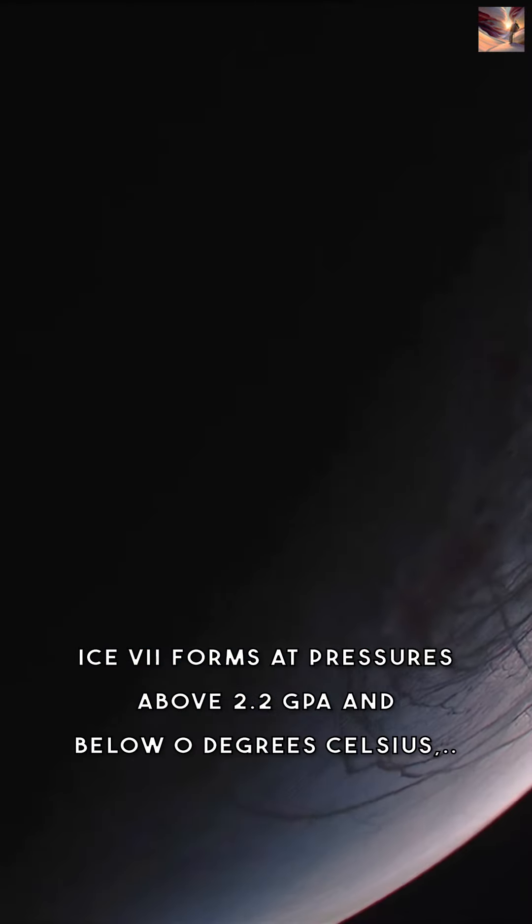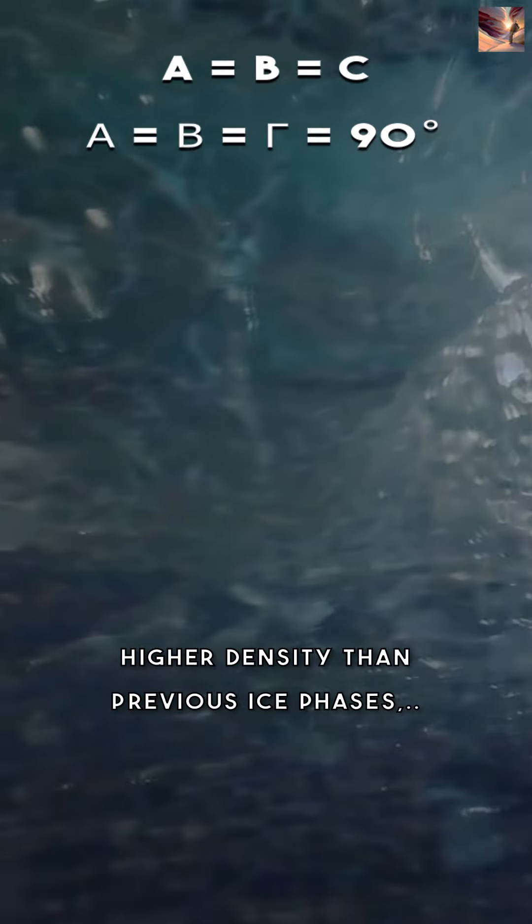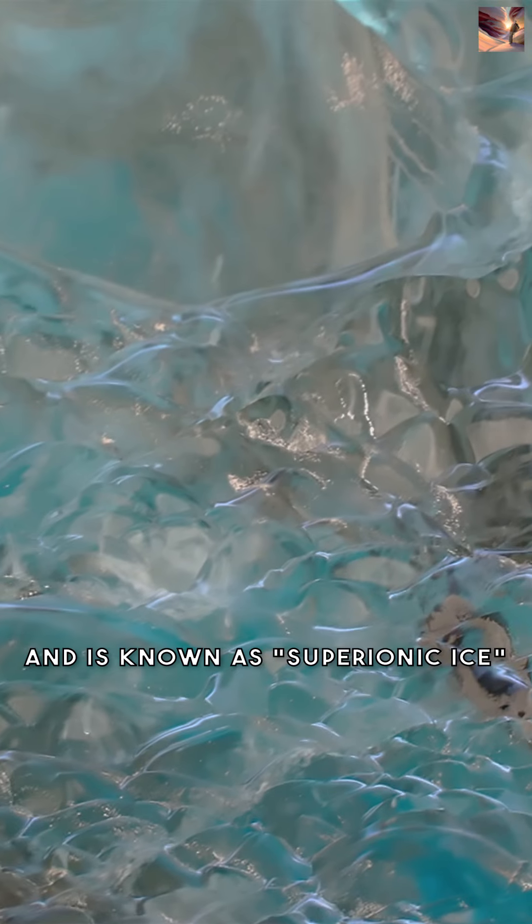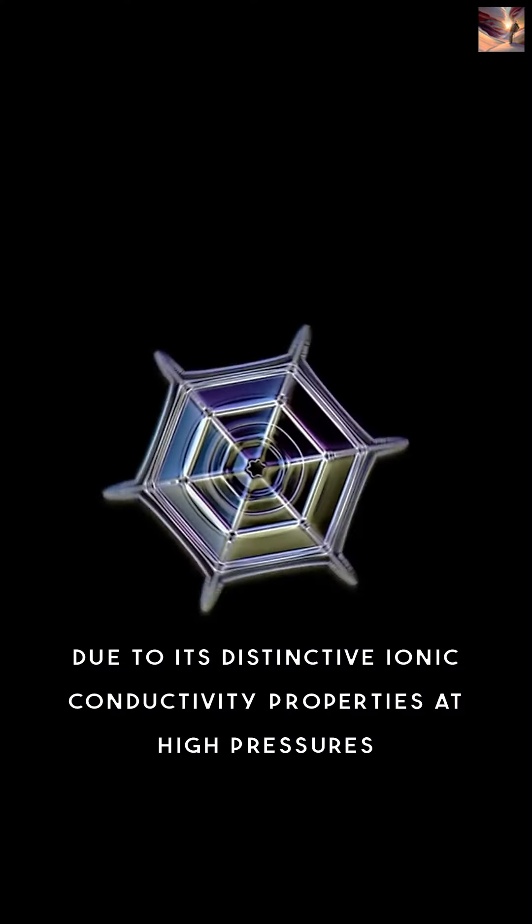Ice 7 forms at pressures above 2.2 gigapascals and below 0 degrees Celsius, with a cubic crystal structure and higher density than previous ice phases. It is known as superionic ice due to its distinctive ionic conductivity properties at high pressures.